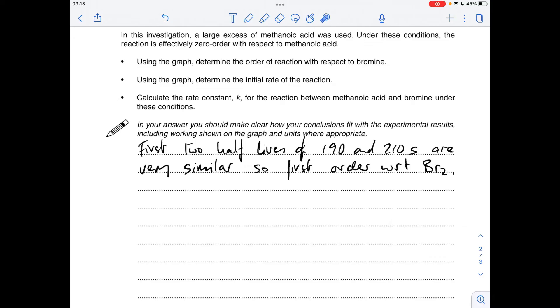Obviously you've got to have that working out on your graph for the examiner to credit, but in words just something really simple. So first two half-lives of 190 and 210 seconds are very similar, so we can say it's first order with respect to bromine.